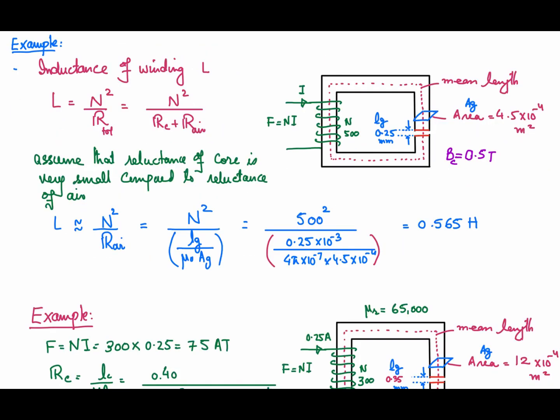The next example concerns calculating the inductance of a winding. It uses the same core structure but with an air gap introduced, having a width of 0.25 mm. We need to find the inductance of the winding which has 500 turns. Inductance equals N² divided by the total reluctance of the flux path.